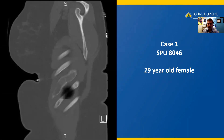Case number one is from a 29-year-old female. Here we have a sagittal section of a CT scan showing an expansile mass in the rib. The mass is predominantly lytic, with little areas of cloudy gray and white, giving us a ground glass appearance. This mass expands and distorts the rib, but it does not destroy the rib.